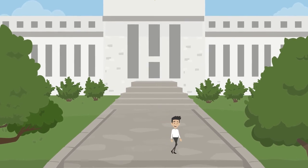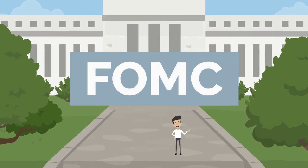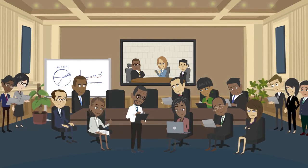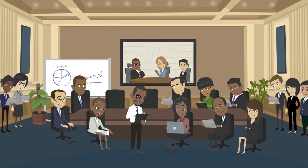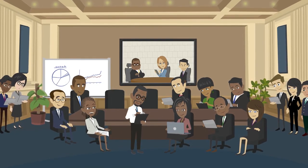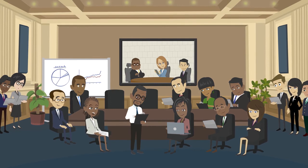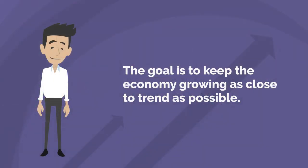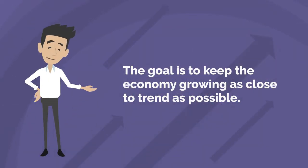the Federal Open Market Committee, abbreviated as FOMC, is likely to lower its target range for the Federal Funds Rate to lower interest rates and ease financial conditions for consumers and businesses. The goal is to keep the economy growing as close to trend as possible.